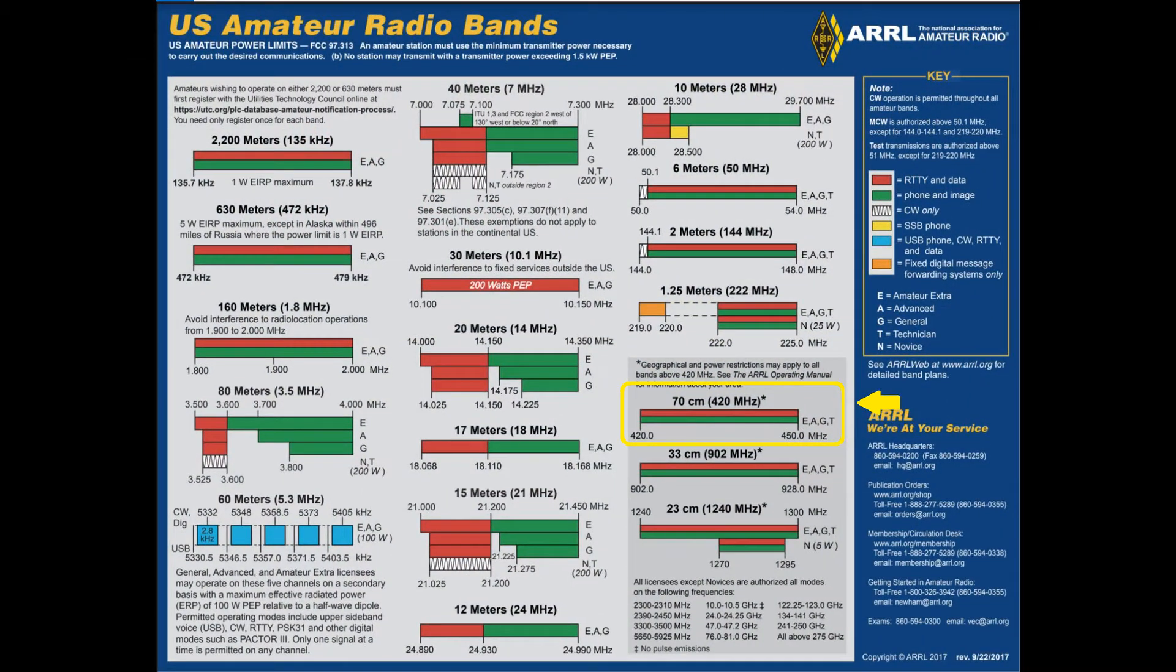This next slide shows you the US amateur radio bands. There's three levels of licensing in the amateur radio arena: the lowest being technician, followed by general, then amateur extra. I currently hold the amateur extra, which is the highest one. With the highest one you get access to all these bands and frequencies.